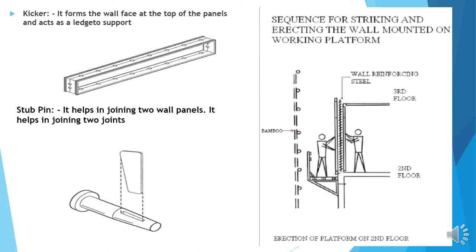Sequence for striking and erecting the wall mounted on the field. See here the bamboo scaffolding, generally we can erect it. This is the bracket, external bracket, which also comes with the aluminum formwork. Here you can see a person is erecting it.